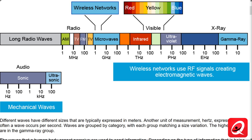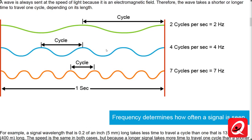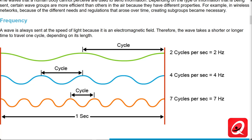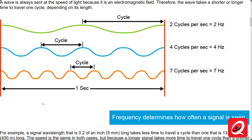One of the first principles defining parameters of the electromagnetic spectrum is frequency. Frequency is measured in hertz or Hz. A wave is always sent at the speed of light because it is an electromagnetic field, so the wave takes a shorter or longer time to travel one cycle depending on its length. Hertz is a derived unit of frequency in the international system of units, defined as one cycle per second, named after Heinrich Rudolf Hertz — the first person to provide conclusive proof of the existence of electromagnetic waves.